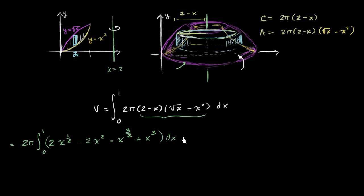And so now we're ready to take the antiderivative. So this is going to be equal to 2π times the antiderivative of all of this business evaluated at 1 and at 0.